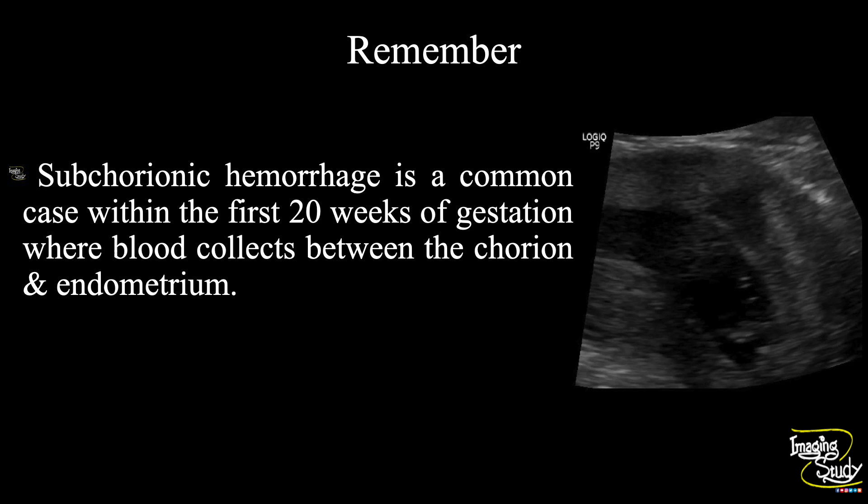The take-home message: subchorionic hemorrhage is a common finding within the first 20 weeks of gestation, where blood collects between the chorion and endometrium. So if the patient gives any history of severe pain, try to search for this common topic.